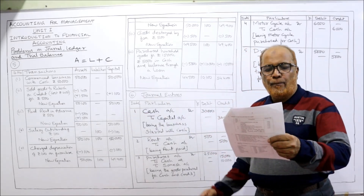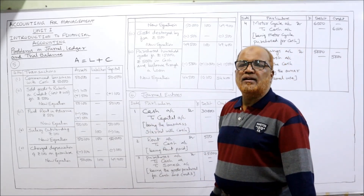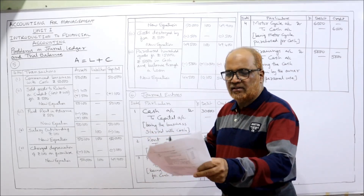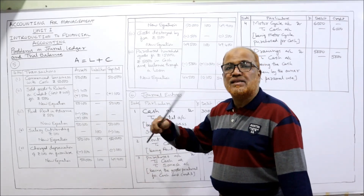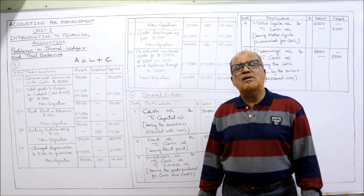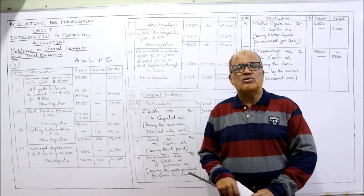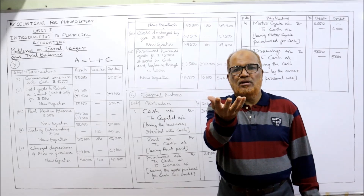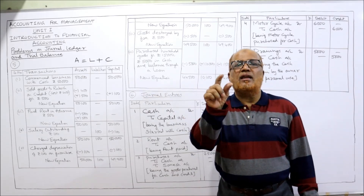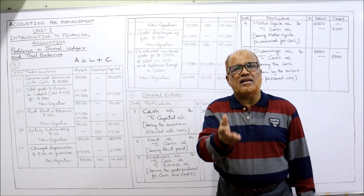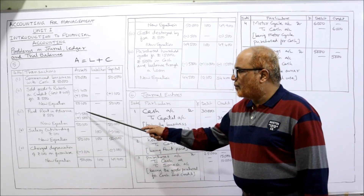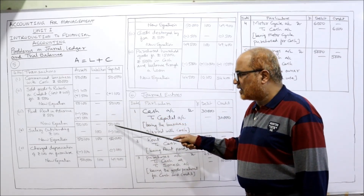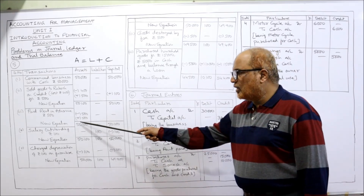Third transaction: paid rent in advance 500. Cash is going out so assets decrease by 500 (minus 500). But rent paid in advance is a prepaid rent, which is an asset, so a new asset comes in (plus 500). One asset goes out and another asset comes in — only assets are affected. New equation: 50,100 unchanged. No change in liability; capital remains 50,100.